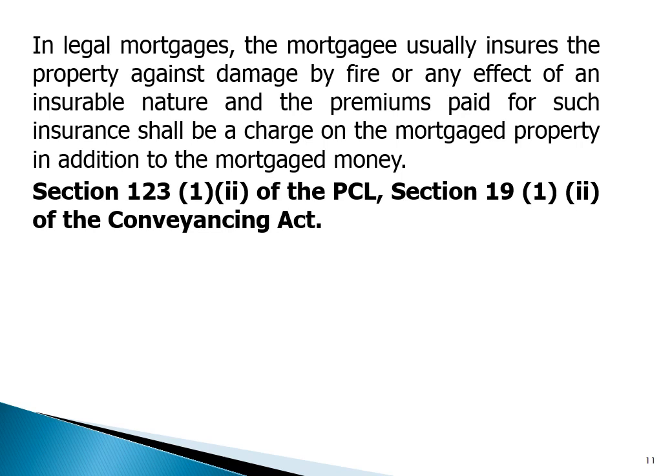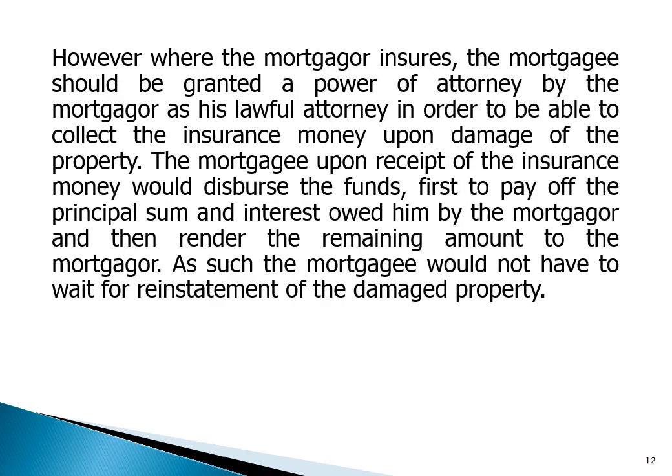This is provided under Section 123(1)(2) of the PCL and Section 19(1)(2) of the Conveyancing Act. However, where the mortgagor insures, the mortgagee should be granted a power of attorney by the mortgagor to act as his lawful attorney in order to be able to collect the insurance money upon damage of the property. The mortgagee, upon receipt of the insurance money, would first apply the funds to pay off the principal sum and interest owed to him by the mortgagor, then render the remaining amount to the mortgagor. As such, the mortgagee would not have to wait for reinstatement of the damaged property.